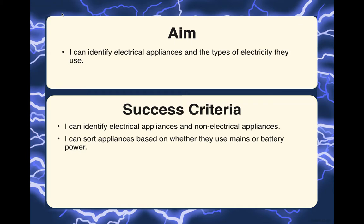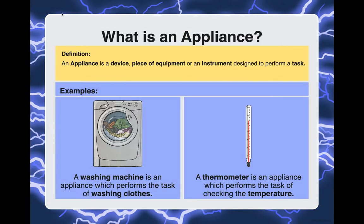But first, let's answer the question: what is an appliance? An appliance is a device, piece of equipment, or instrument designed to perform a task. An example is a washing machine — a washing machine is an appliance which performs the task of washing clothes.